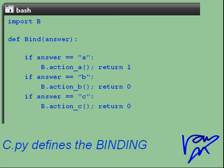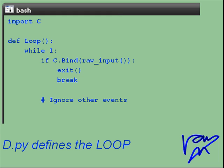C.py defines the binding between user events and actions. D.py defines the loop.